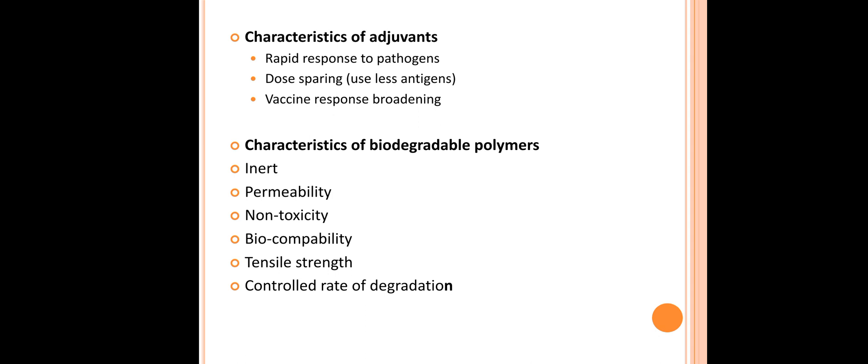Characteristics of adjuvants: they respond rapidly to pathogens, require less antigen, and broaden the vaccine response. Characteristics of biodegradable polymers: they should be inert so they do not cause adverse effects inside the body or react with the vaccine itself. They should be permeable, non-toxic, biocompatible, have tensile strength, and be able to control the rate of degradation.